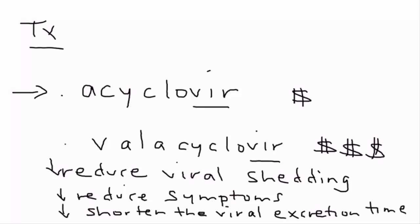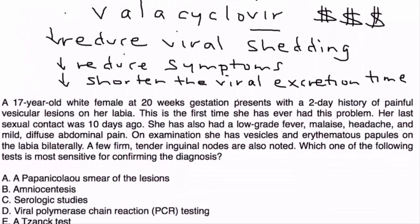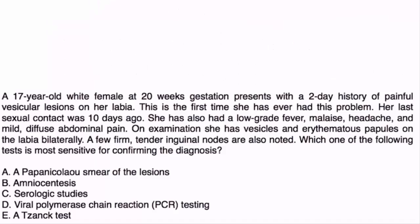Clinical vignette 1: A 17-year-old female at 20 weeks gestation presents with a two-day history of painful vesicular lesions on her labia — the first time she has ever had this problem. Her last sexual contact was 10 days ago. She also has low-grade fever, malaise, headaches, and mild diffuse abdominal pain. On exam, there are vesicles and erythematous papules on the labia bilaterally, and a few firm, tender inguinal nodes are noted.